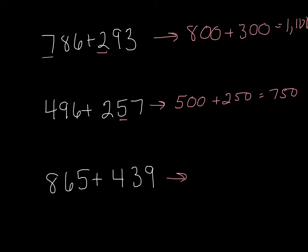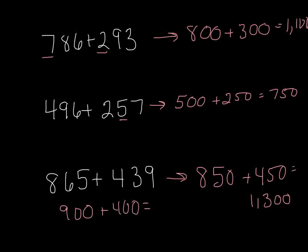865 is closest to 850. 439 is closest to 450. So my rounded estimate here is 1,300. If you had rounded this to 900 plus 400, that also is a close estimate. You would have gotten 1,300 as well.